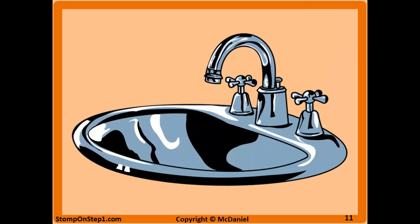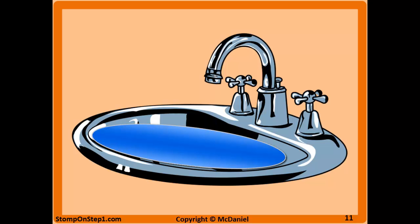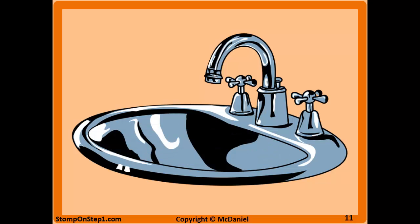Another concept to help solidify this relationship is the sink metaphor. Think of the water coming out of the faucet as incidence — those are the new cases. The level of water building up in the sink represents prevalence, the total number of cases. The drain represents people who are either cured or dying, leaving the disease population. If patients are cured quickly, the drain is functioning and the water level stays low. But if nobody is being cured and disease duration is long, the drain gets clogged and the sink backs up — the level of water builds up.